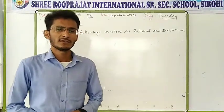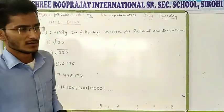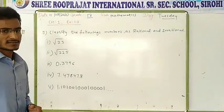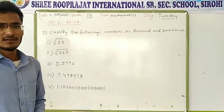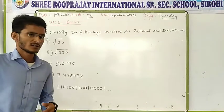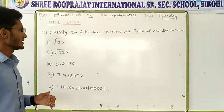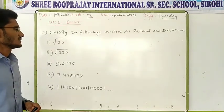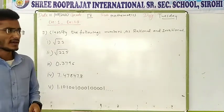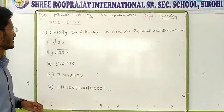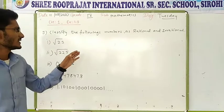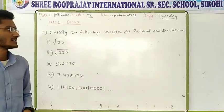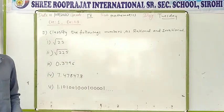Good morning, students. So in previous class, it's all questions till 8. Now question number 9: classify the following numbers as rational or irrational.